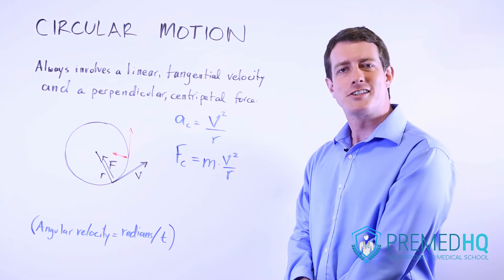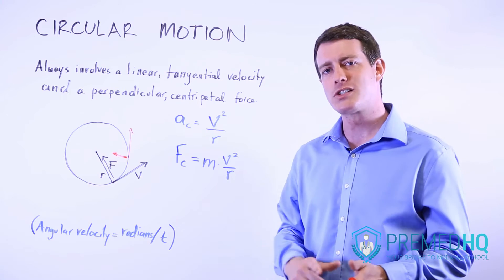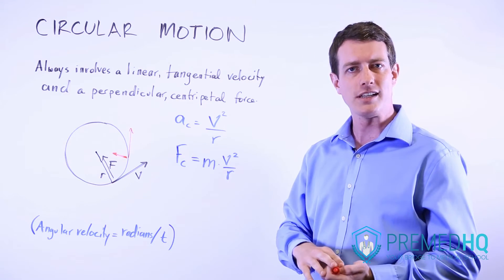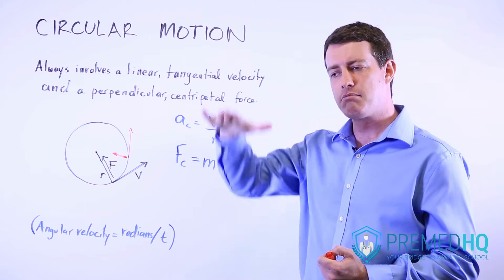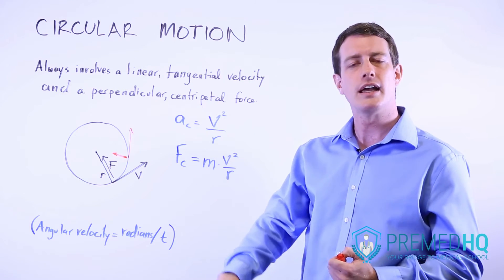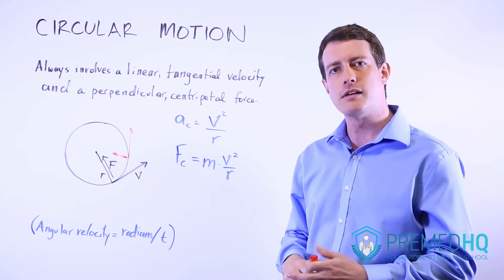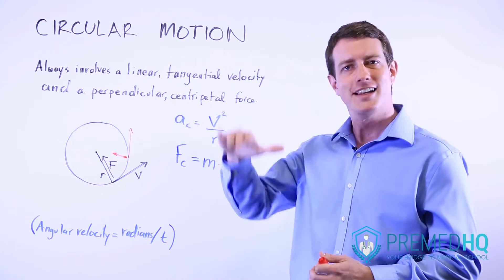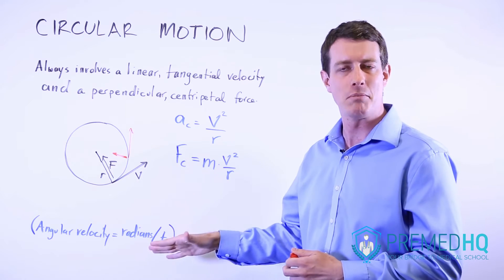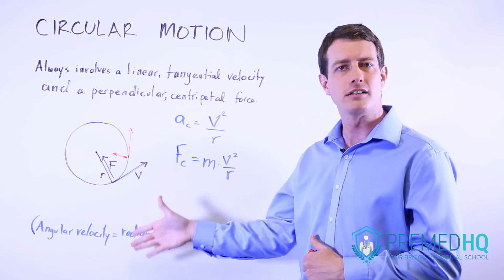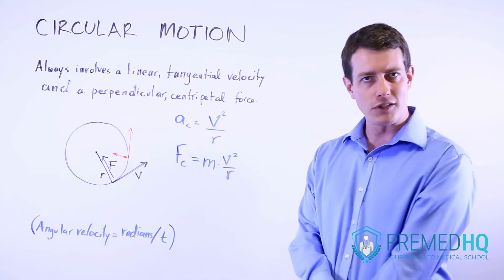You also see angular velocity with harmonic motion. If you have a pendulum that is swinging, that has an angular velocity. And if you have an object being pulled down on a spring and the spring oscillates up and down, that's another example of harmonic motion where you can see angular velocity show up. But it's unlikely they'll ask you detailed calculations based on angular velocity.